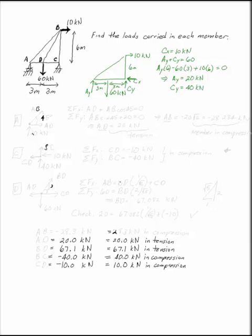Now I want to know what's happening in each of my individual members. I'm going to start by looking at the joint at A, because I know what's happening here. If I consider the joint, I've got my 20 kN external load that I already solved for, and I only have two more unknowns: AB and AD.